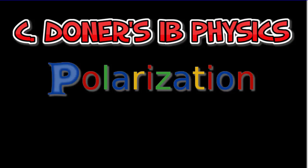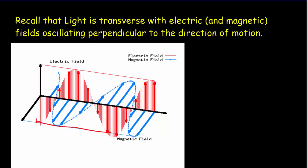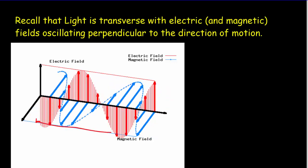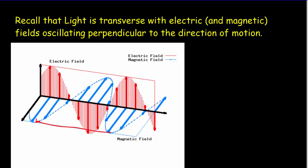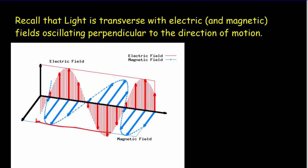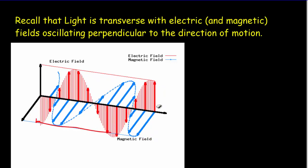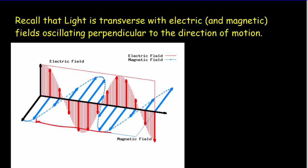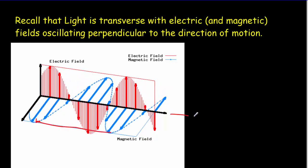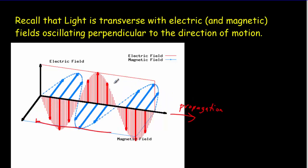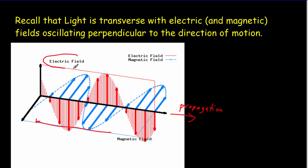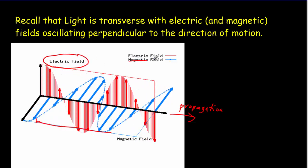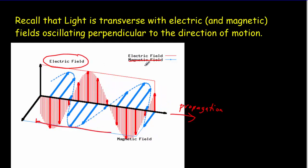Let's take a look at polarization today. Light is a form of electromagnetic radiation, which means it's composed of oscillating electric and magnetic fields. We have a direction of propagation, and you can see our wave is propagating in this direction. When we talk about polarization, we're just going to focus in on the electric fields and not worry about the magnetic fields, the ones shown in blue.